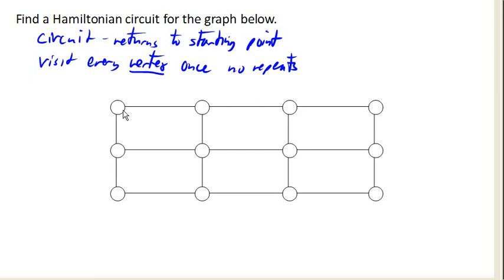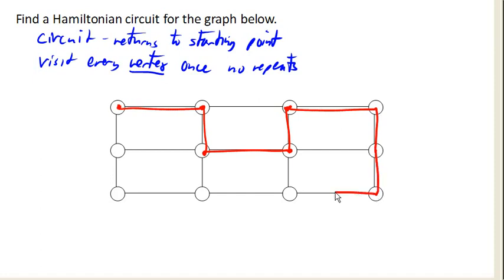So if I start here, I could draw my path this way, then maybe this way, and this way, and this way. Now notice I would not want to go back up, because I've already visited this vertex and I don't need to visit it again. So I'll just continue on. And there we go — there is a Hamiltonian circuit on this graph. It visits every vertex exactly once with no repeats. It doesn't matter that we haven't visited all the edges; all we care about is the vertices.